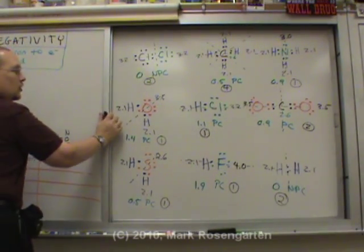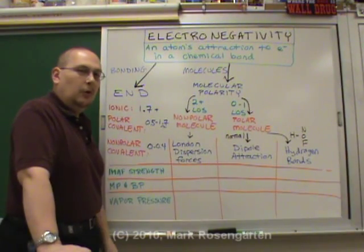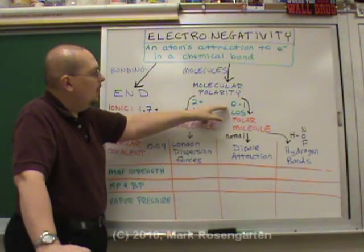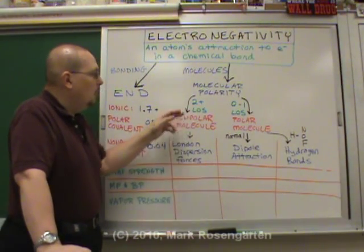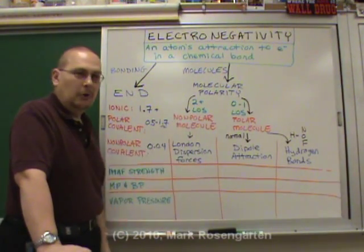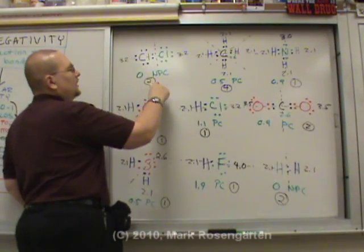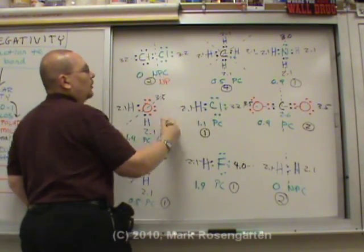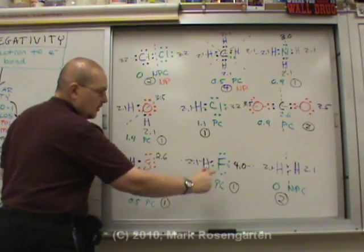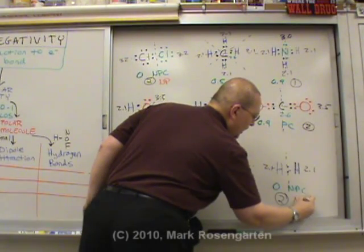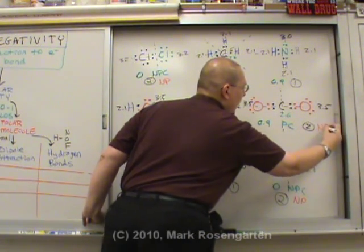Now according to this chart, two or more lines of symmetry indicates a nonpolar molecule, while zero or one lines of symmetry indicates a polar molecule. Two lines of symmetry - nonpolar. More than two lines - nonpolar. Two lines - nonpolar. Two lines - nonpolar.